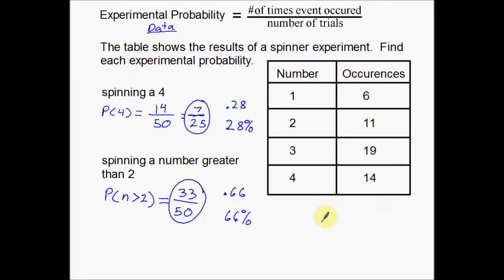Whereas theoretical probability, totally different. You use the numbers that could happen, or the total number of events or outcomes that could happen, as opposed to what actually did happen with experimental probability.